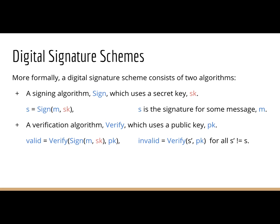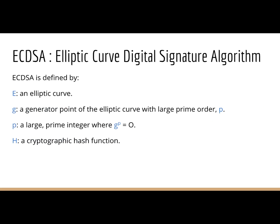We can define a digital signature scheme using two algorithms. The first is sign: you take a message M and a secret key, and this returns a signature which should hold the properties we listed. There should also be a verification algorithm: given a signature, a message, and a public key, you should be able to verify that the right signature with the right public key always returns valid; otherwise it should always return invalid for any other possible signatures.